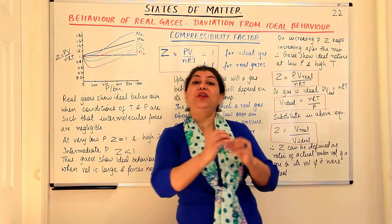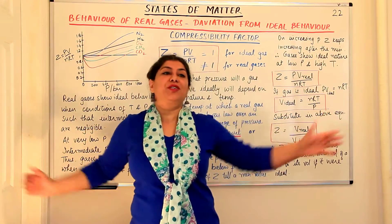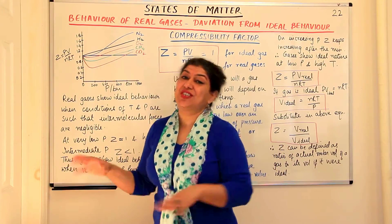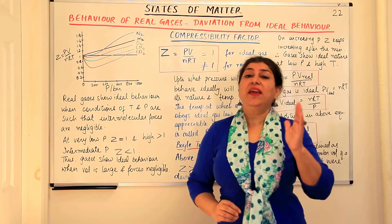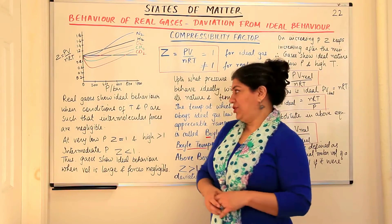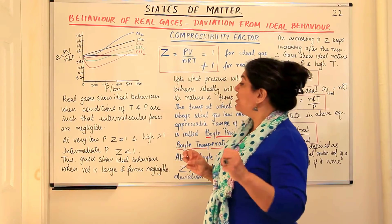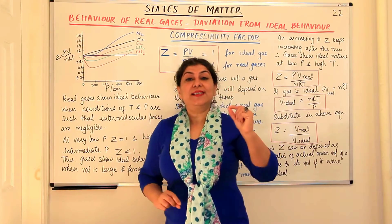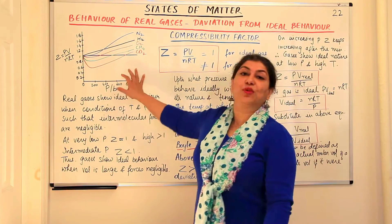For the second assumption — no intermolecular interactions — if you increase the volume so much that the molecules are far apart, they cannot interact with each other and cannot experience attractions. Therefore, it is possible to make gases behave ideally by adjusting pressure, temperature, and volume conditions. Real gases show ideal behavior when conditions of temperature and pressure are such that the intermolecular forces are negligible. If you can somehow make the intermolecular forces negligible, the gas would behave ideally.